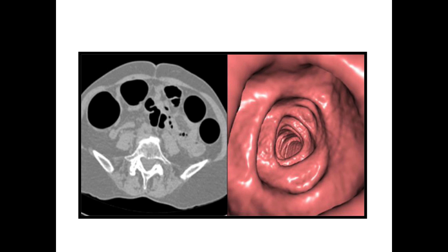Here is an example of a fly-through view of the colon created by the computer — this is a 3D reconstruction. On the computer you can start at the anus and fly up the colon virtually. And this is the conventional 2D view, which radiologists are trained to look at, plus you can have coronal and sagittal views.